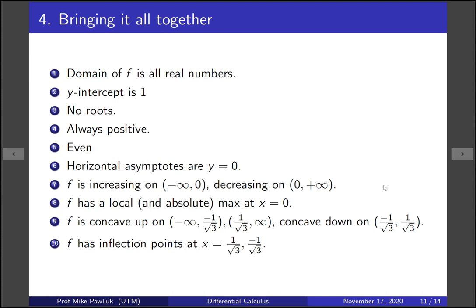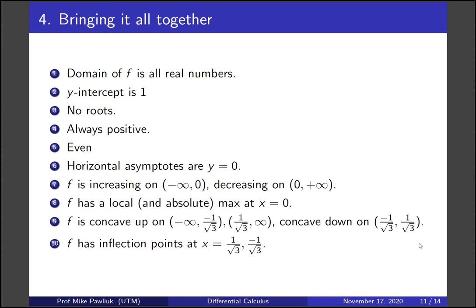Bringing it all together, here is all the information we have. The first six facts came from the function itself, two came from the first derivative, and two came from the second derivative. Let's take all of this information and put it together to draw the graph. Take a moment to try this yourself.